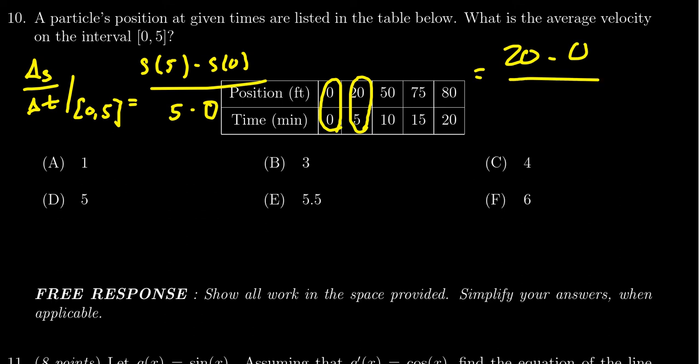In the denominator, we just get five minus zero. Simplifying this, we get 20 over five, or in other words, four feet per minute—that's our unit right there. And that gives us choice C as the correct answer.